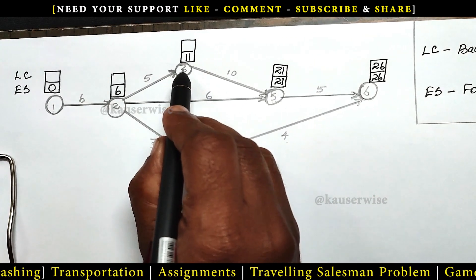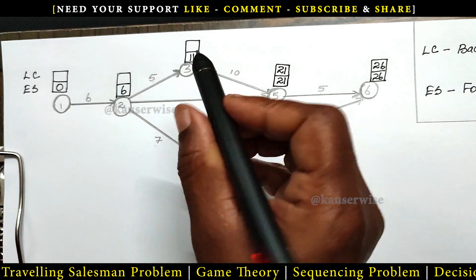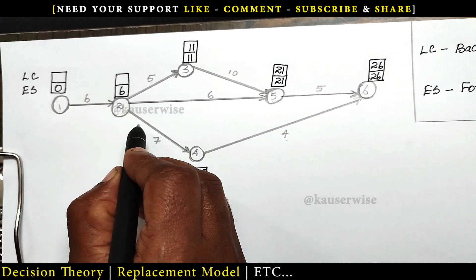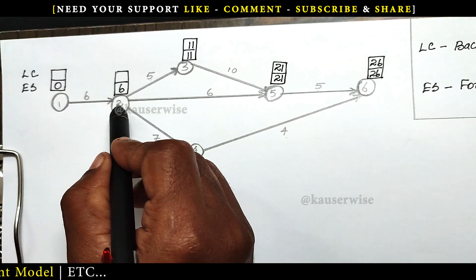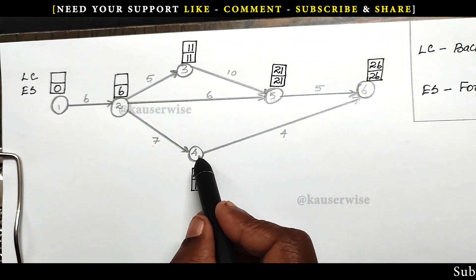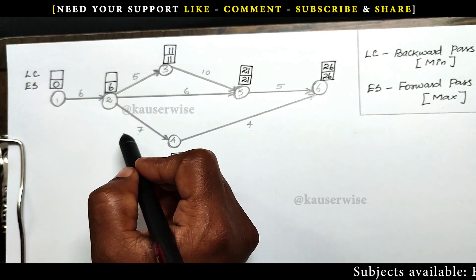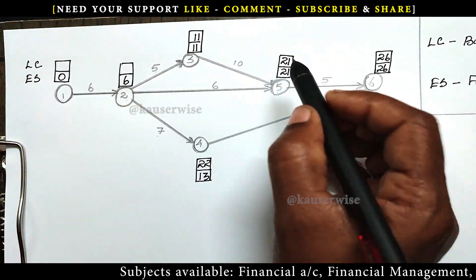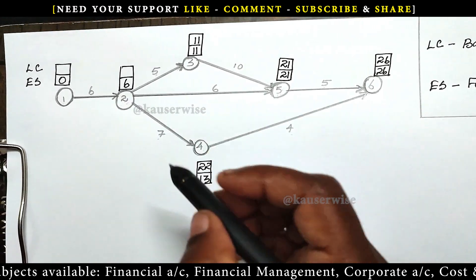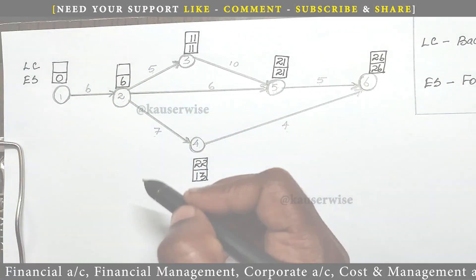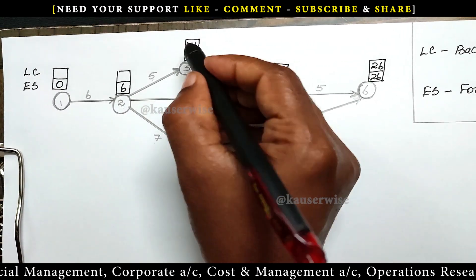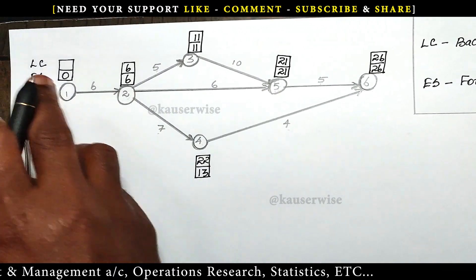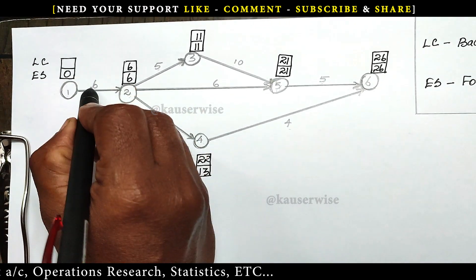The next one, node 3: 21 minus 10 equals 11. The next one, node 2 — here we have three options. The first option is path via node 3: 11 minus 5 equals 6. The second option via node 5: 21 minus 6 equals 15. The third option via node 4: 22 minus 7 equals 15. We need to select the minimum duration — the minimum is 6. So 11 minus 5 equals 6. We select minimum duration for backward pass, that is for latest completion time. The last one: 6 minus 6 equals 0. This is the way to calculate earliest start and latest completion time.